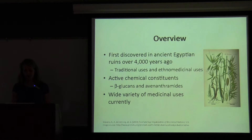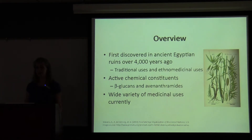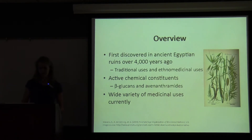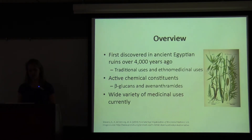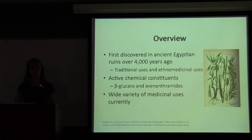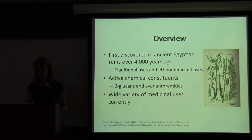A brief overview of this plant. It was first discovered in ancient Egyptian ruins over 4,000 years ago, and it was first recorded in De Materia Medica by Dioscorides. There are many traditional and ethno-medicinal uses, and a lot of this medicinal activity is based on active chemical constituents found in oats, mainly beta-glucans and avenanthramides, which I will discuss in a bit. And there are a wide variety of medicinal uses used currently today.